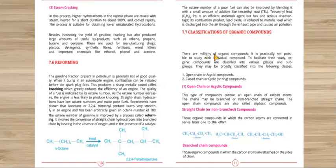It is not possible to study each compound individually. So, what do we do for our study? We group organic compounds together. First of all, we have two broad classes: open chain or acyclic compounds, and closed chain or cyclic or ring compounds.